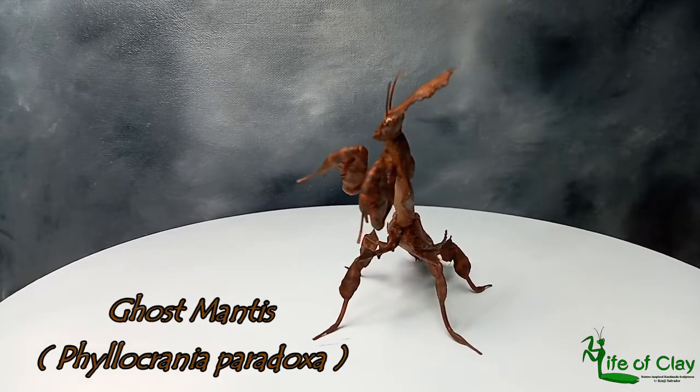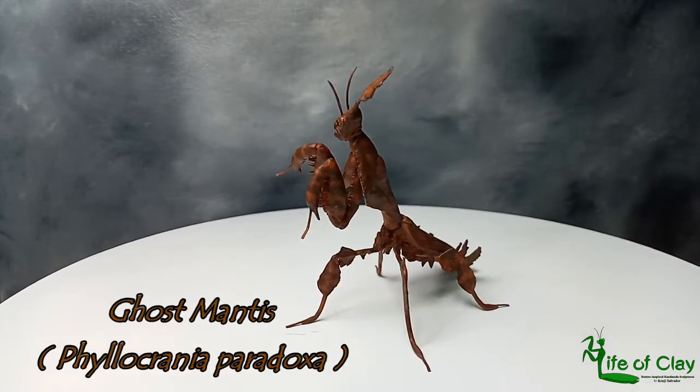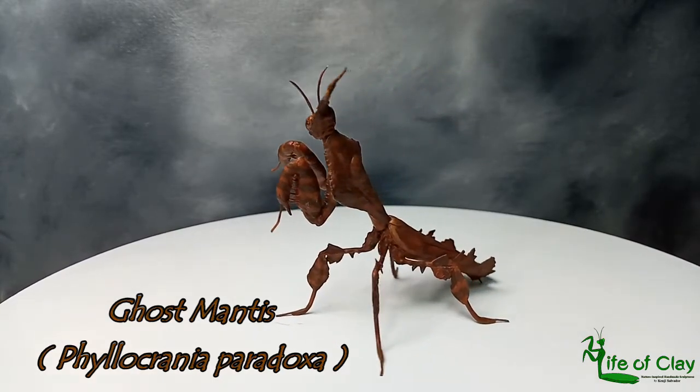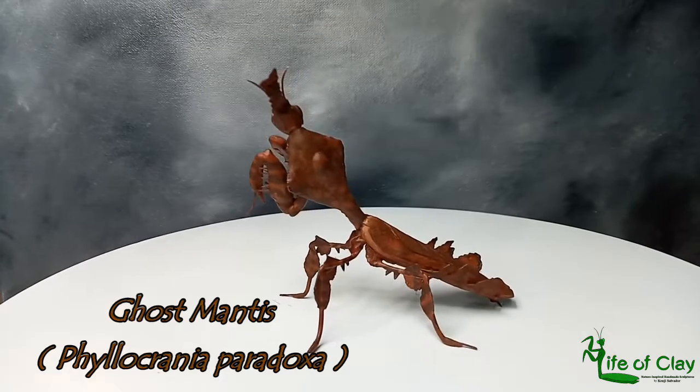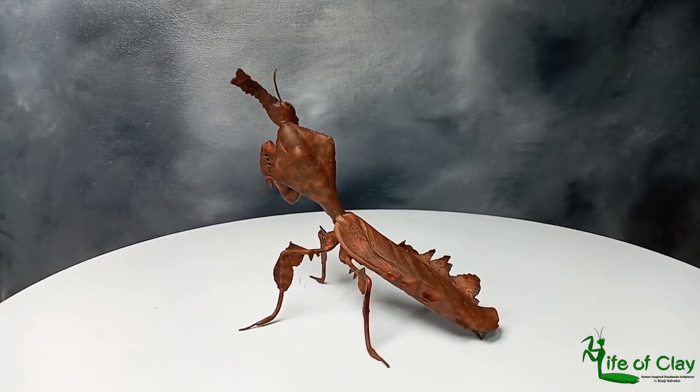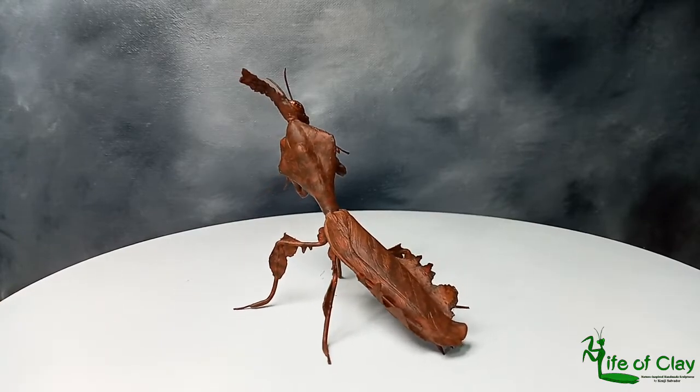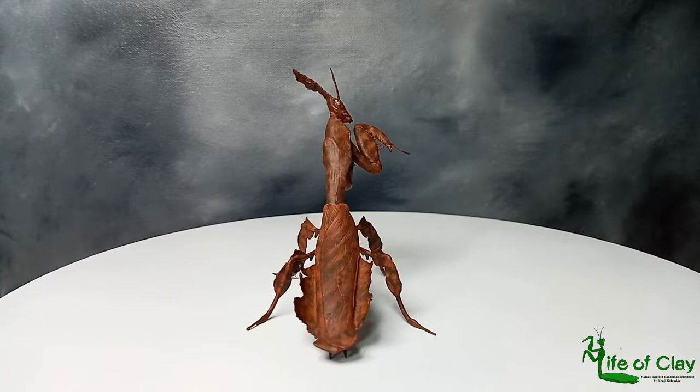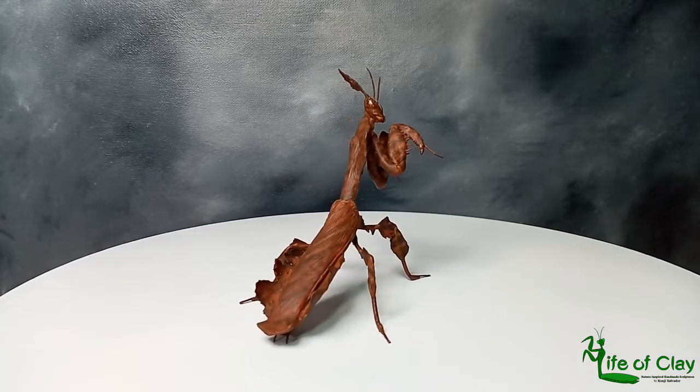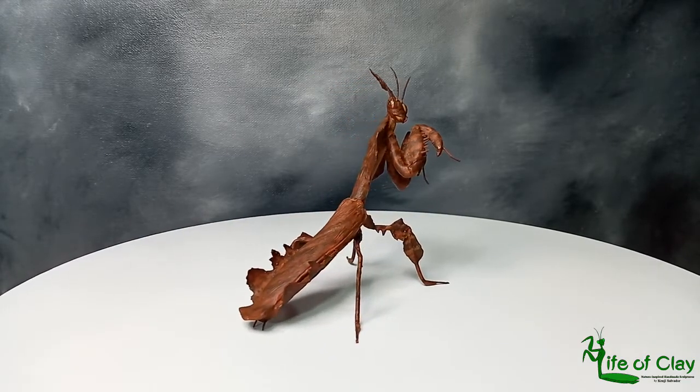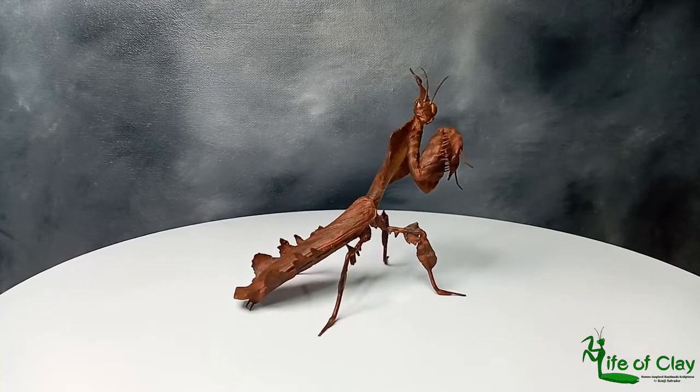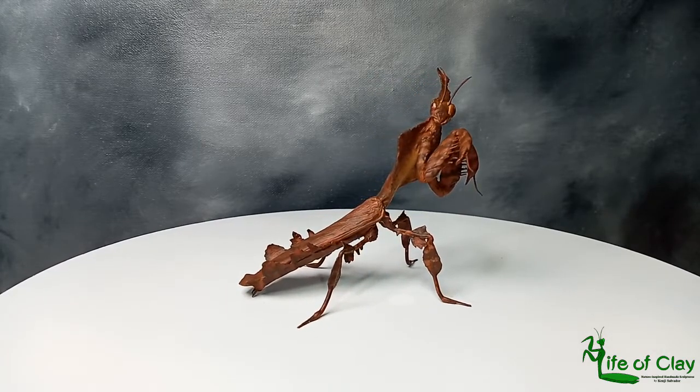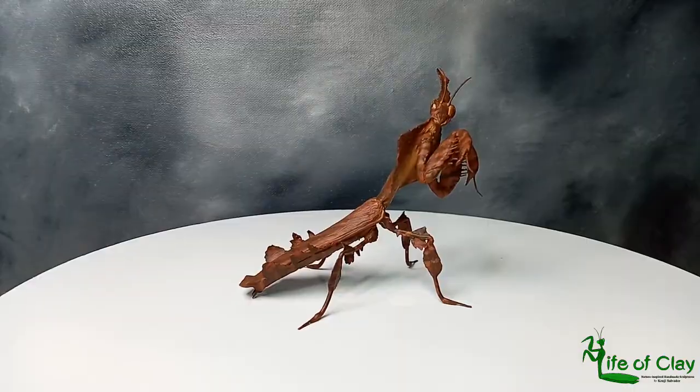Ghost mantis is the smallest species of mantis from Africa, remarkable for its leaf-like body and withered leaf appearance using form of camouflage. It grows only to 1.8 to 2 inches, a miniature among other praying mantis, but in this sculpture I made it a little bigger than its actual size. So come on, bring the clay on and let's begin.